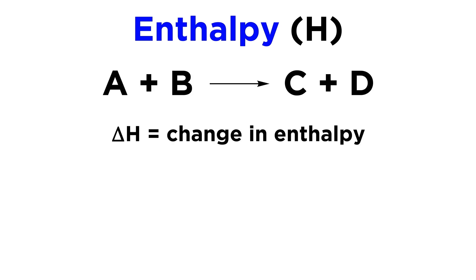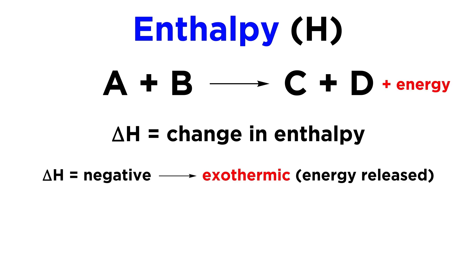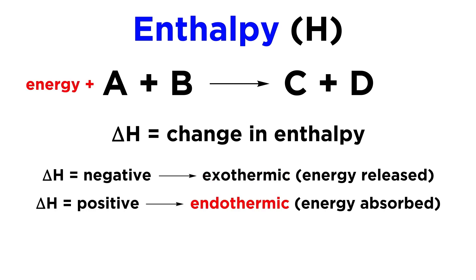We will use thermochemical equations to list enthalpy data for a given chemical reaction. These are just chemical equations with a delta H value listed. If delta H is negative, the reaction is said to be exothermic, and that quantity of heat energy is absorbed in order for the reaction to occur.